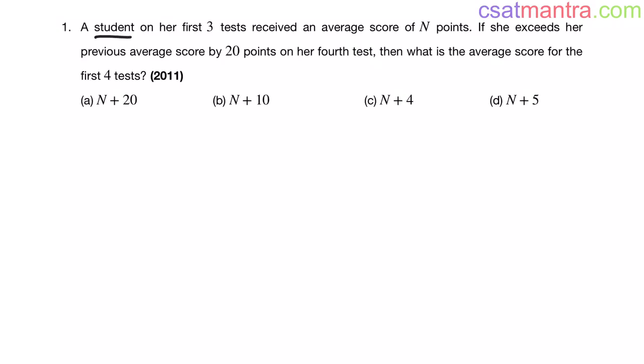A student on her first three tests received an average score of N points. If she exceeds her previous average score by 20 points on her fourth test, then what is the average score for the first four tests?